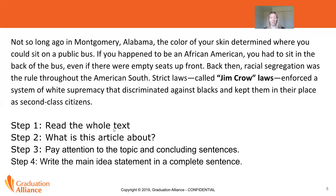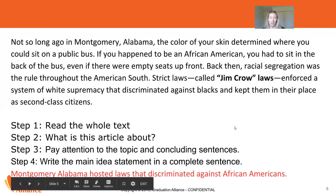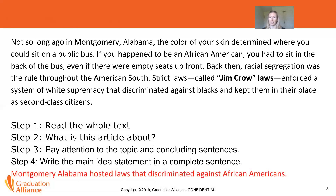The next step is to write the main idea statement in a complete sentence. Putting that all together, I definitely have some clues: the Jim Crow laws, and words like 'segregation' and 'discriminated' hint that people were separated on a public bus. But then there were laws to separate people. So my main idea statement will be: 'Montgomery, Alabama hosted laws that discriminated against African-Americans.' This paragraph is all about those laws taking place in Montgomery, Alabama.